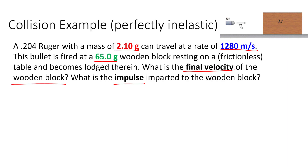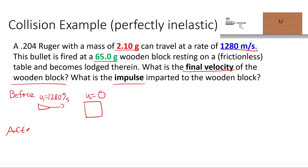We can set up conservation of momentum here. Before: the bullet is moving to the right and the block is not moving. After: the two objects are stuck together. Since they're both moving at the same speed, I can just write V for the unknown final velocity.